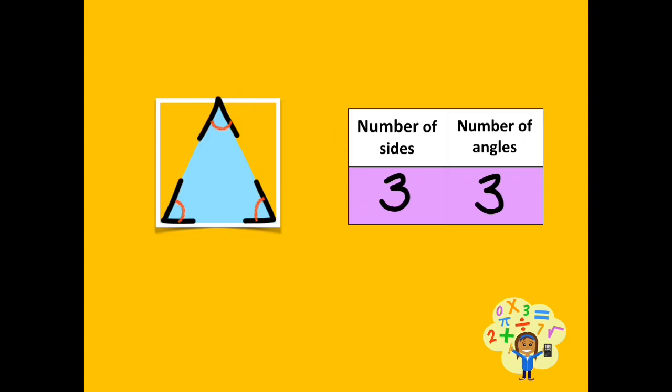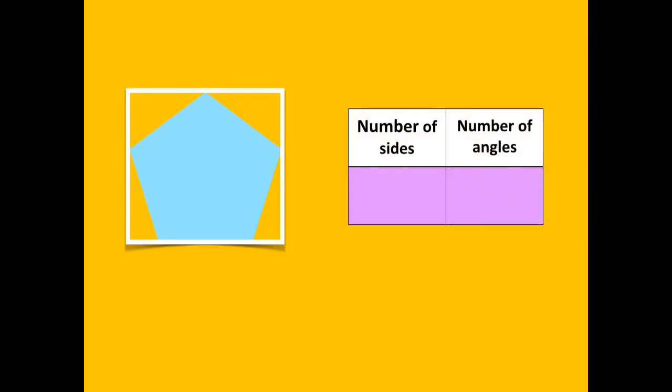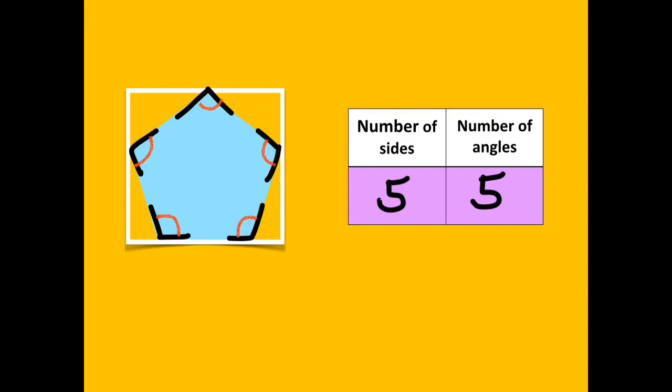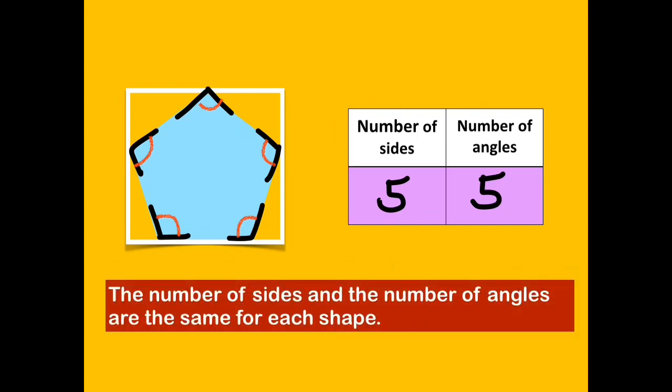Did you notice any pattern? Let's try it once again. Look at the given shape. How many sides are there in a pentagon? A pentagon has five sides. How about its angles? How many angles are there in a pentagon? A pentagon has five angles. The number of sides and the number of angles are the same for each shape.